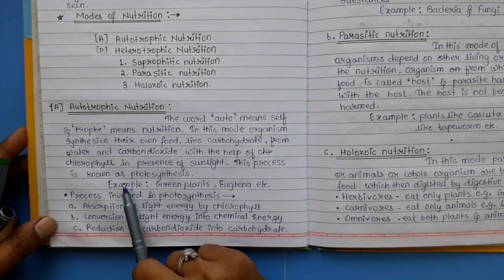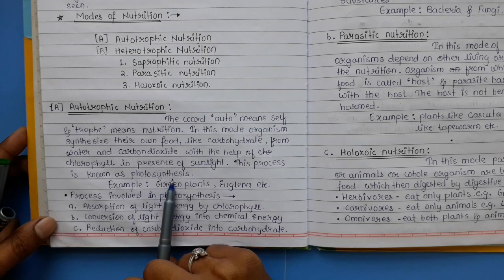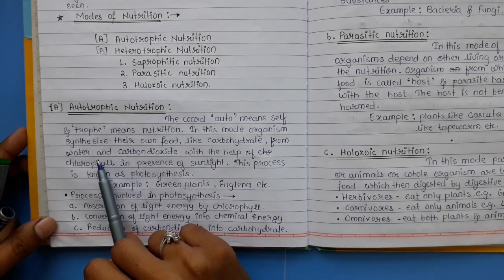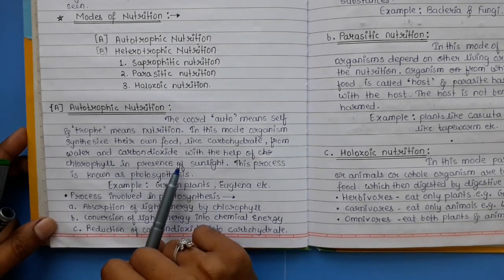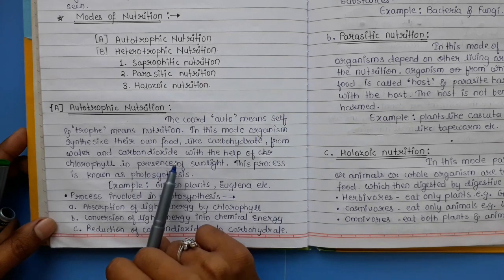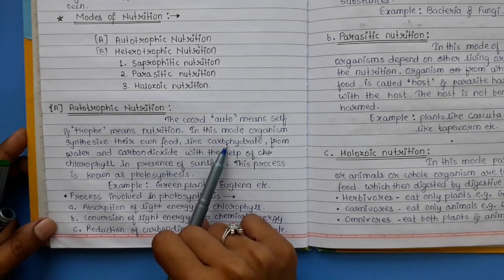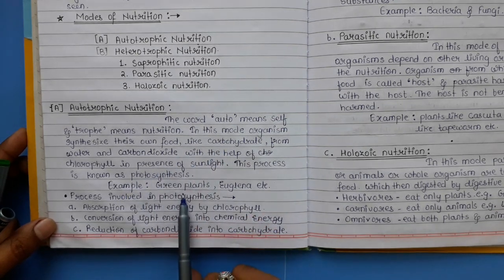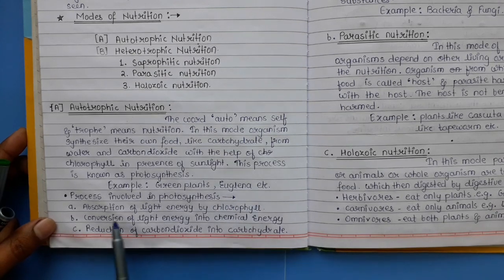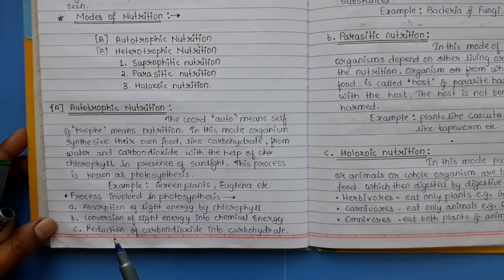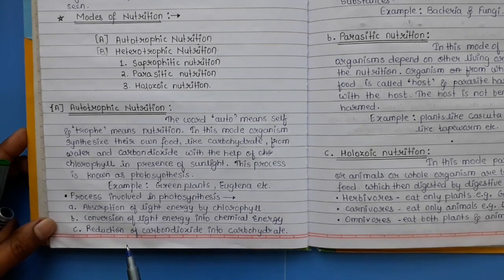This process is called photosynthesis. When a plant uses carbon dioxide, water, and sunlight, it makes its own food in the form of carbohydrates. Examples include green plants and Euglena. The first step involved in photosynthesis is the absorption of light energy by chlorophyll.